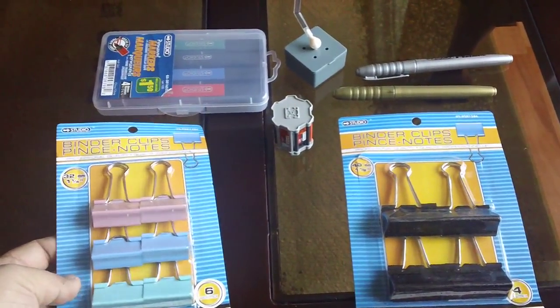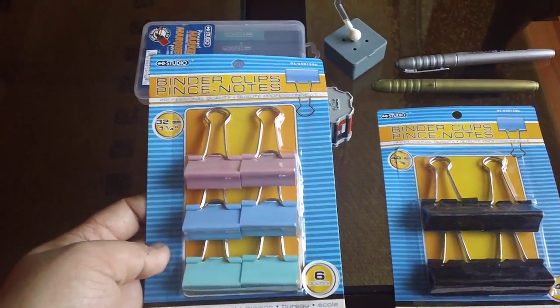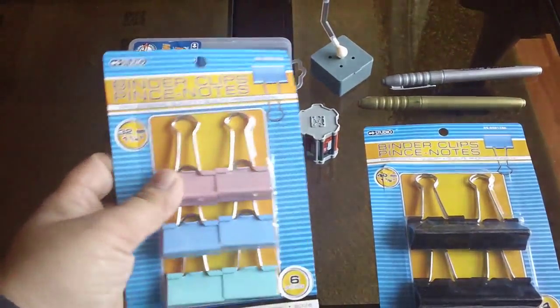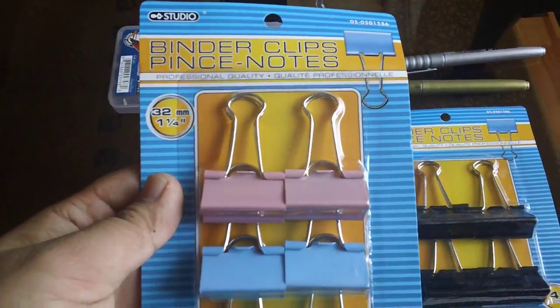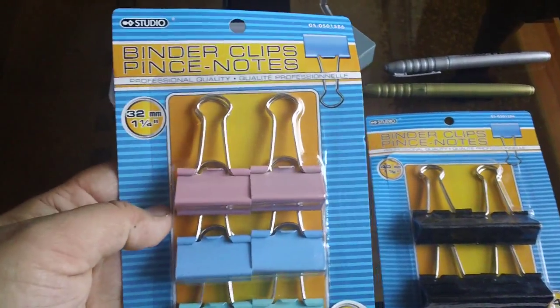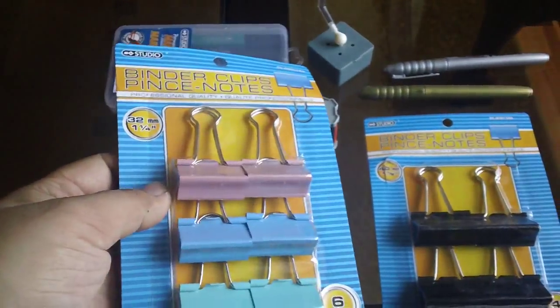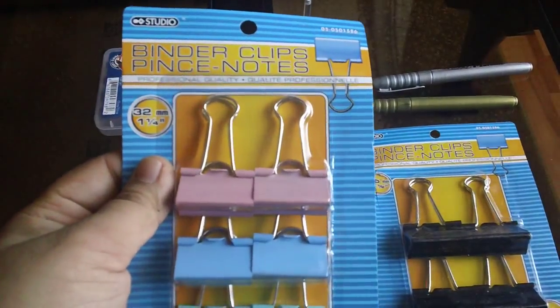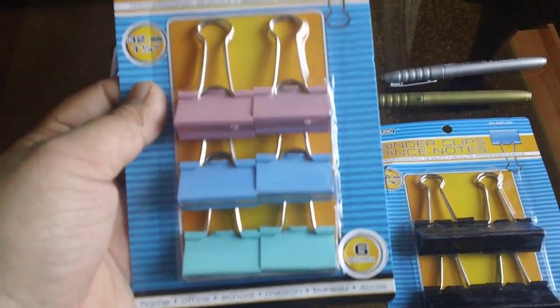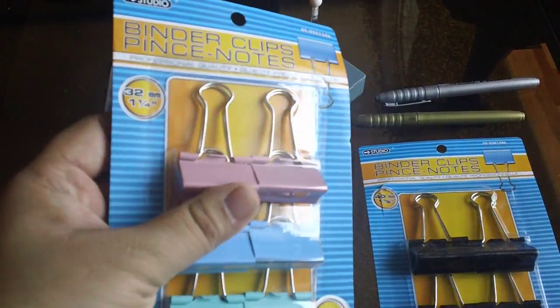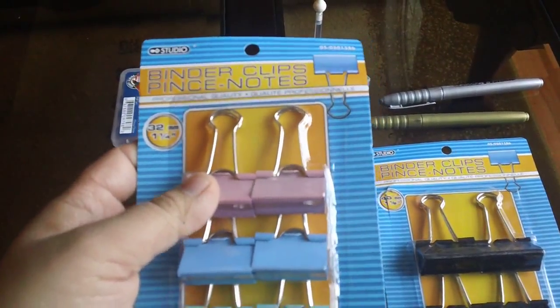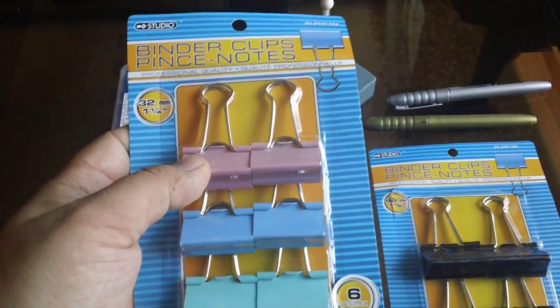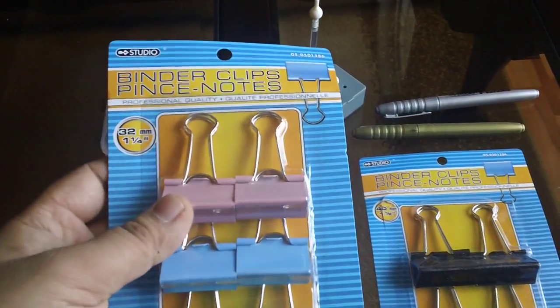Basically when I go to Dollar Store from time to time I look for stuff that I can use for gunpla or modeling in general. So first up, I'm pretty sure any mid to high end modeler probably uses this. Just a clip. These are very good for holding two parts together when you're gluing them, instead of holding them down with your hand because then your hands are tied up and you can't do anything else.